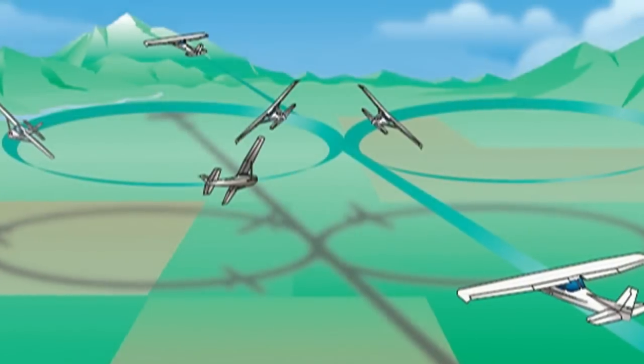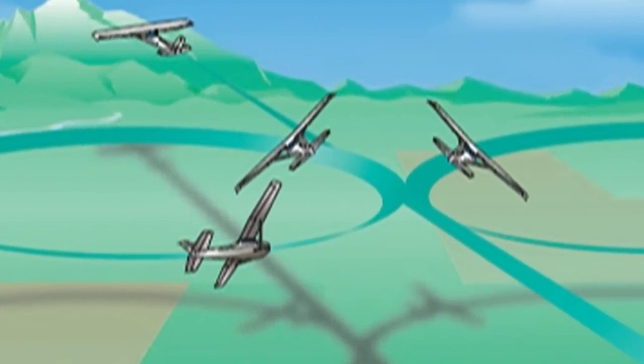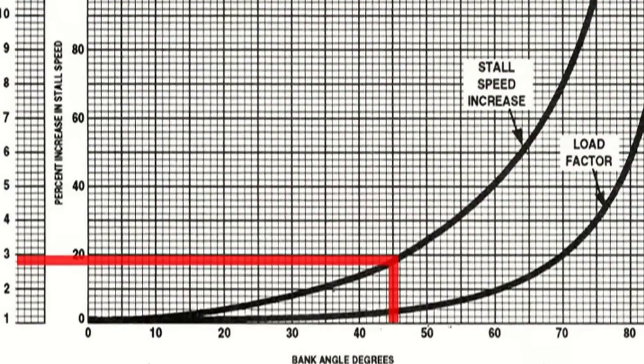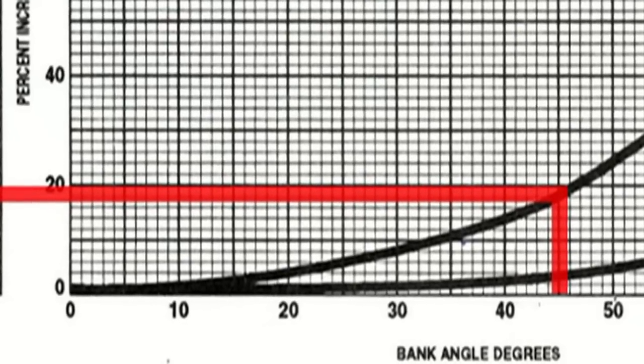In level turns, the changing lift vector requires a little bit of back pressure as we trade some of that vertical component of lift for the horizontal component of lift, which is what brings us through the turn. The increased load factor in steep turns increases the effective weight of the plane, forcing the wings to produce that much more lift to maintain the same flight attitude, and our stall speed increases as well. This graph shows that at a 45-degree bank angle we have a stall speed that's about 20 percent higher than in straight and level flight.